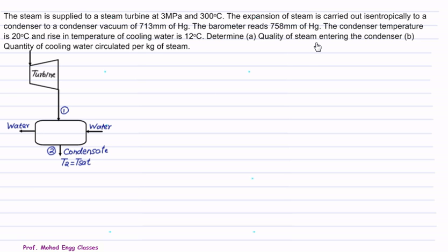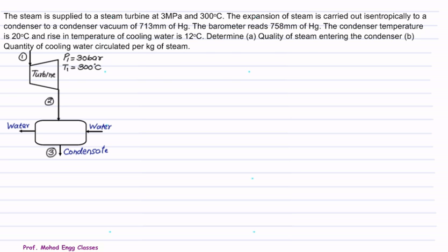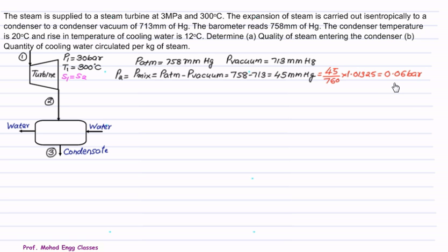We want to find the quality (dryness fraction) of steam at the condenser inlet and the quantity of cooling water per kg of steam. The absolute pressure at the condenser is P_mix = P_atmospheric − P_vacuum = 758 − 713 = 45 mm of Hg. Converting to bar: 45/760 × 1.01325 ≈ 0.06 bar. The temperature rise of cooling water is 12°C and condensate temperature is 20°C.